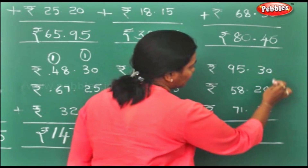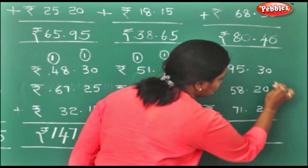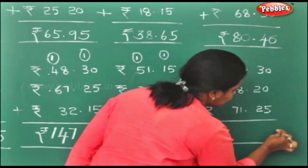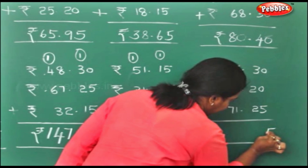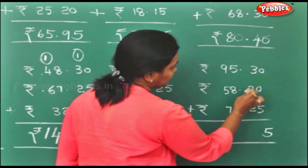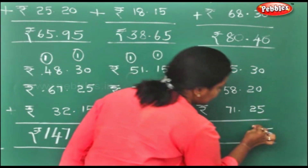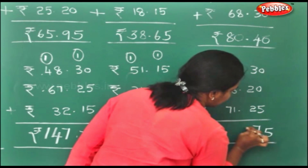0, 0, 0, 5. So 0 plus 5 is 5. 3 plus 2 is 5. 5 plus 2 is 7.